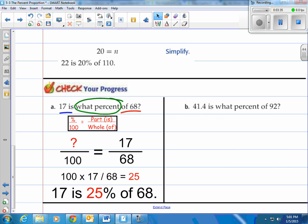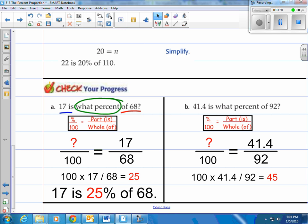All right, how about B here, 41.4 is what percent of 92? Again, looks like we're looking for the percent. So the percent is what we're looking for, 41.4 is our part, 92 is going to be our whole. Cross-multiply 100 times 41.4 divided by 92 and we get 45. So we would say 41.4 is 45 percent of 92.